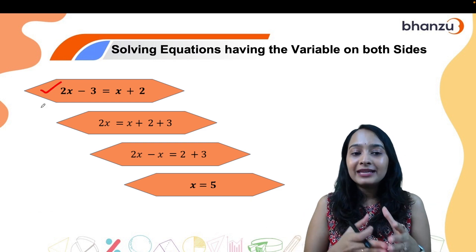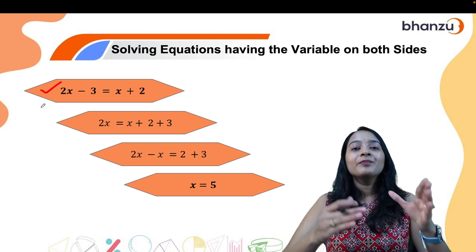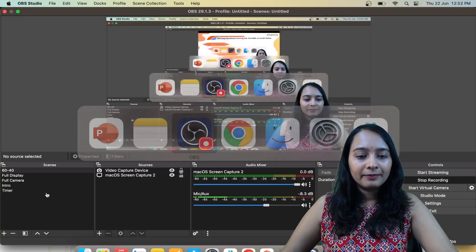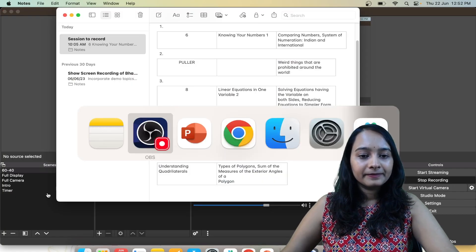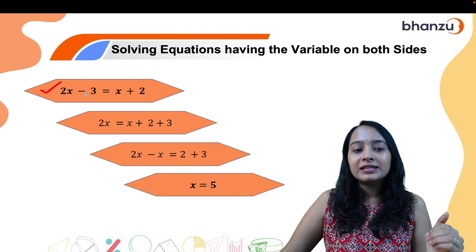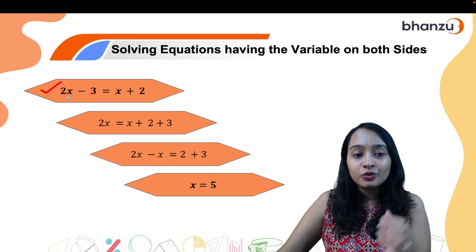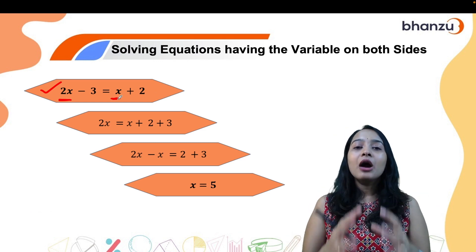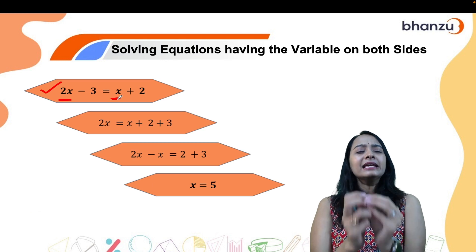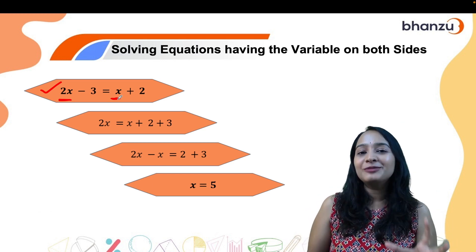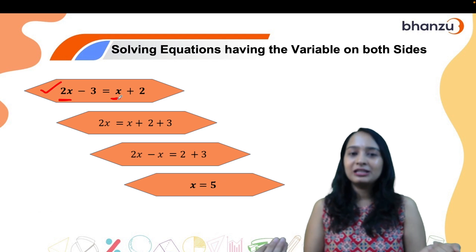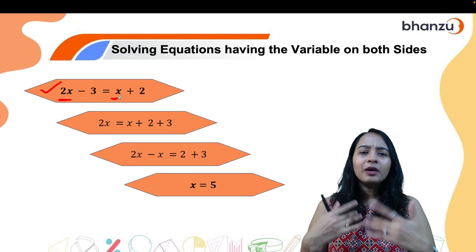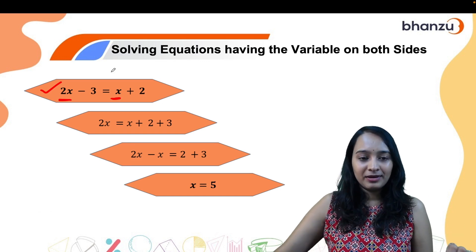Carefully look at the equation: 2x minus 3 equals x plus 2. As you can see, there is a variable on the left hand side and a variable on the right hand side also. The easy way is to bring all the variables to one side and all the constants to one side, either by using the transposing method or balancing method. We will go ahead with the transposing method.